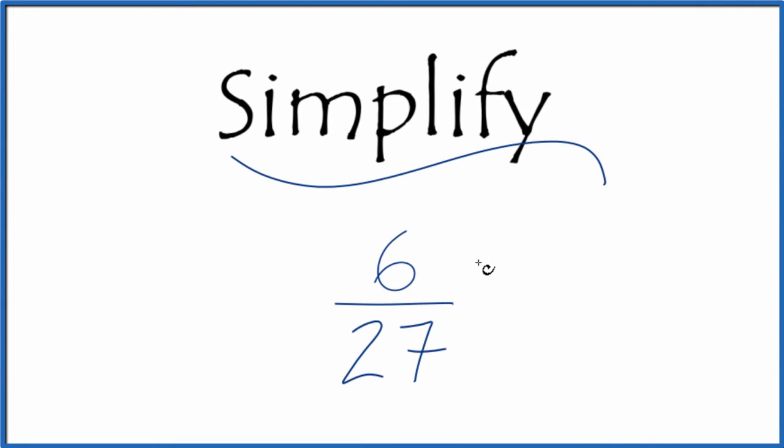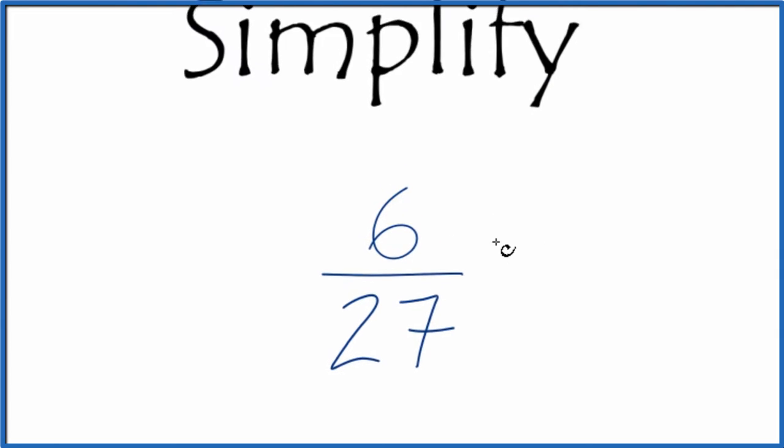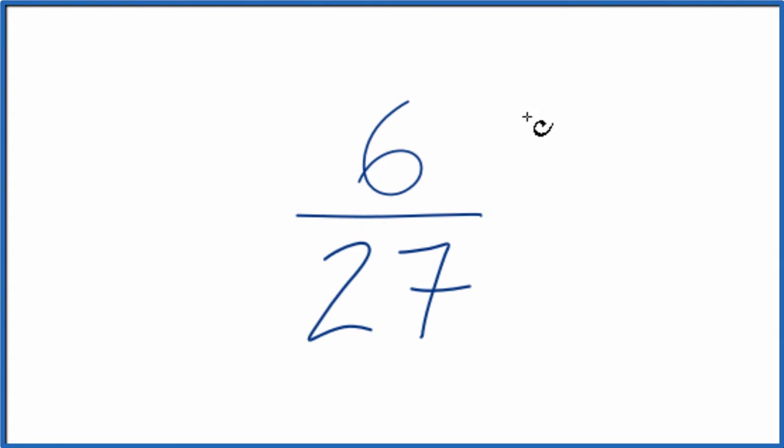If you're asked to simplify the fraction 6/27, here's how you do it. What we're trying to do is find another fraction that's equivalent. It has the same value as 6 over 27, but we've simplified it to its lowest terms.